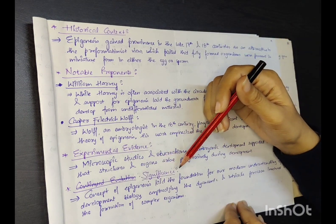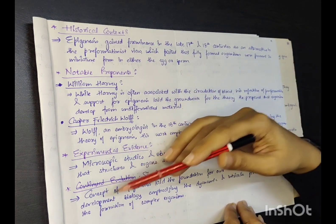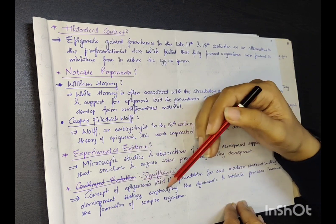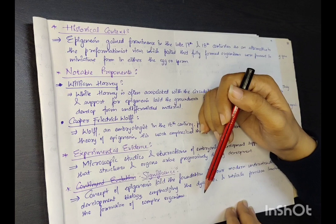The significance of this theory: the concept of epigenesis laid the foundation for our modern understanding of developmental biology, emphasizing the dynamic and intricate process involved in the formation of complex organisms.